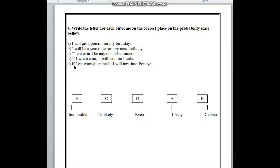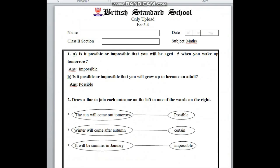In number E here, if I eat enough spinach, I will turn into Popeye. Is this possible? No, it's not possible. So, above impossible in this box, we have to write here E. I hope you all understand how to solve exercise 5.4. So, take care students. Allah Hafiz.